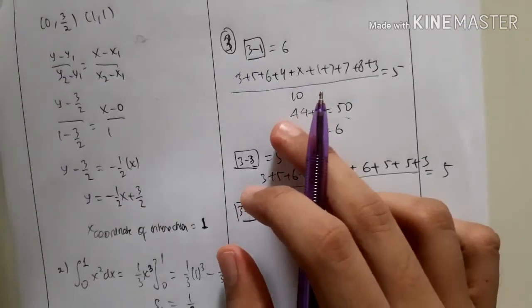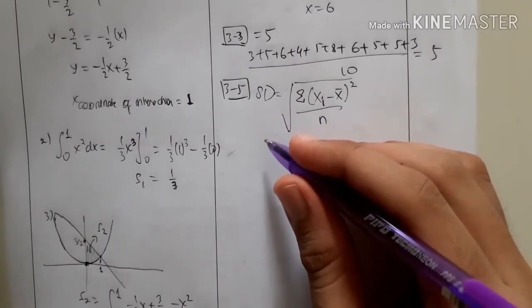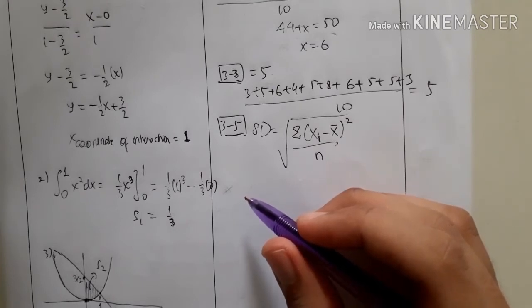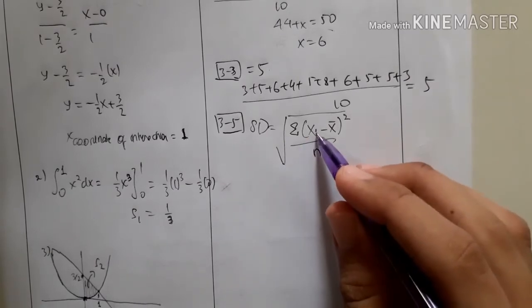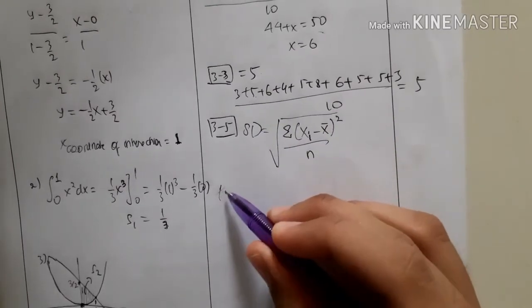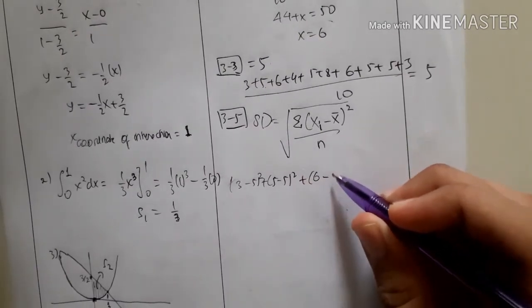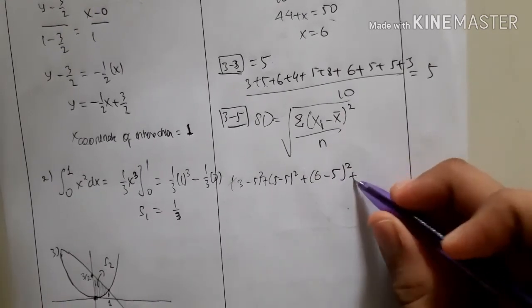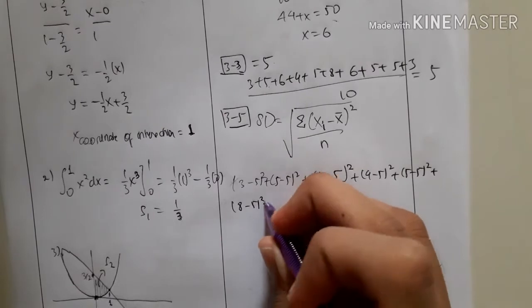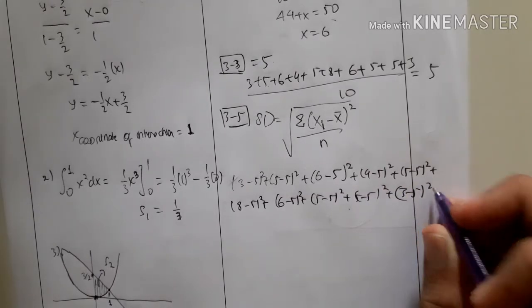For Question B, the mean is 5. Each data point is subtracted from the average and squared: (3−5)² + (5−5)² + (6−5)² + (4−5)² + (5−5)² + (8−5)² + (6−5)² + (5−5)² + (5−5)² + (3−5)², all divided by 10, then we take the square root.